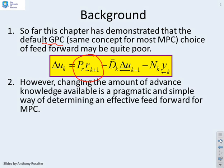But we also showed that there were pragmatic and simple ways of defining an effective feedforward, given that the default value for PR was often quite poor.